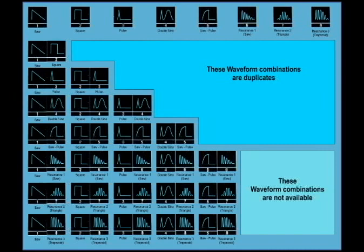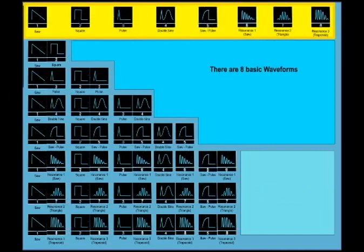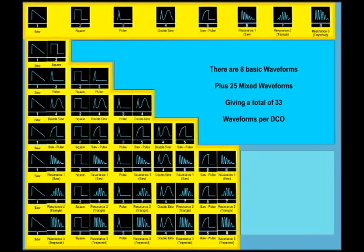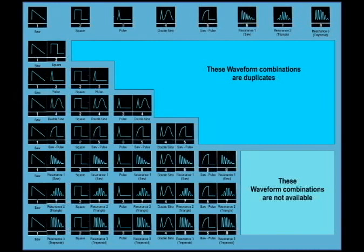To recap, we have eight basic waveforms and then 25 mixed waveforms, giving us a total of 33 different waveforms available per DCO. Now we're going to have a listen to each one of them.